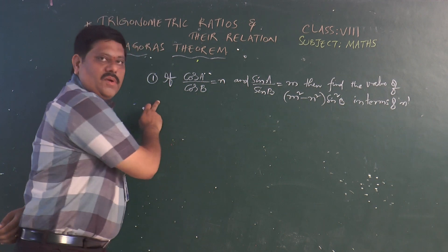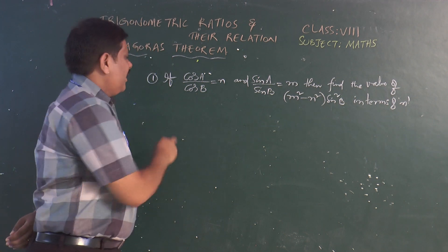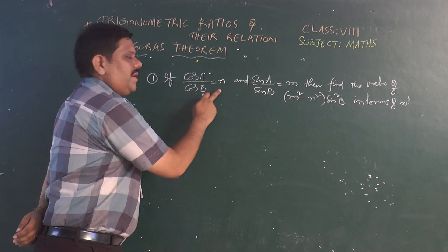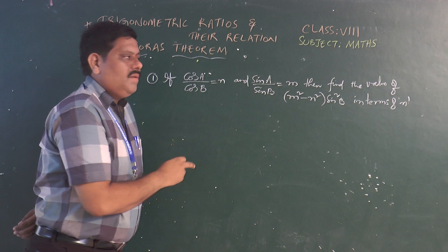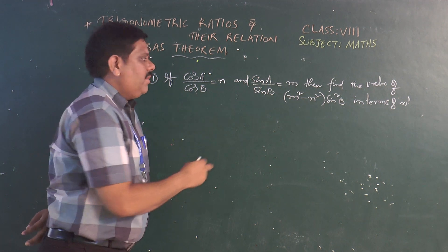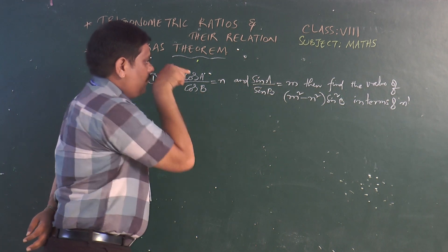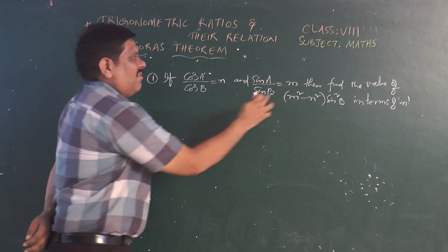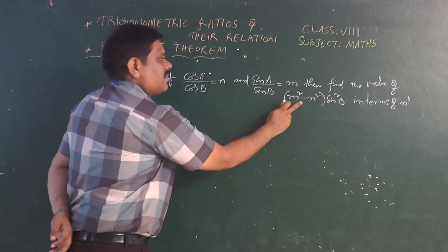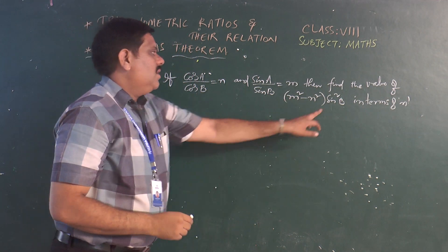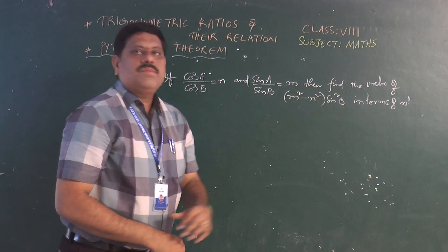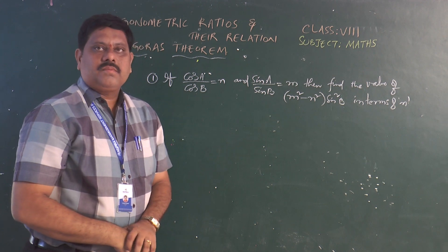The first problem is: if cos A / cos B is equal to n and sin A / sin B is equal to m, then find the value of m² minus n² times sin² B in terms of n.